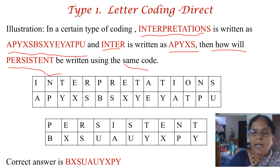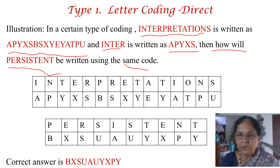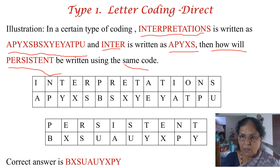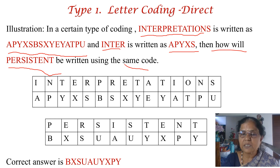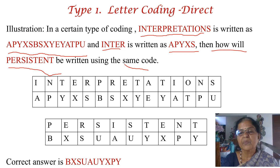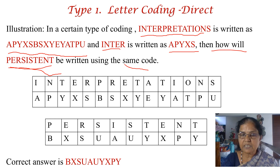What you do is write the word 'interpretations' in separate boxes and write the corresponding code letters below each letter — I is coded as A, N as P, T as Y, and so on. Then write the word 'persistent' in a new set of boxes — P, E, R, S, I, S, T, E, N, T — each letter separately.